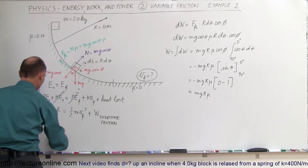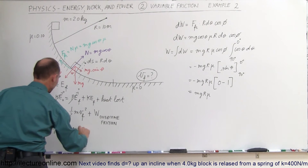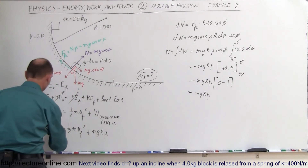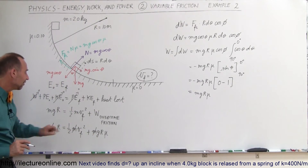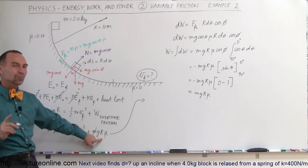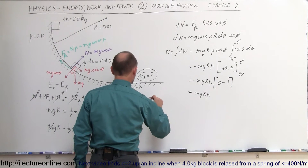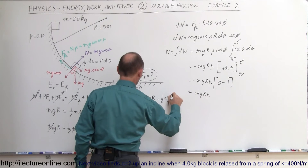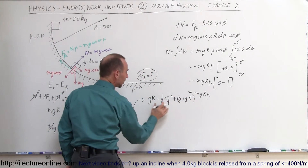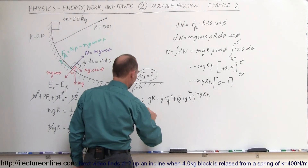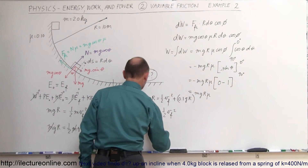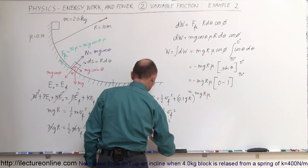Completing the energy equation: mgr = ½mv_final² + mgr·μ. Mass m cancels everywhere. With μ = 0.1: gr = ½v_final² + 0.1·gr. Moving 0.1·gr to the left: gr − 0.1·gr = 0.9·gr = ½v_final². Multiplying both sides by 2: 1.8·gr = v_final². Therefore v_final = √(1.8·gr).